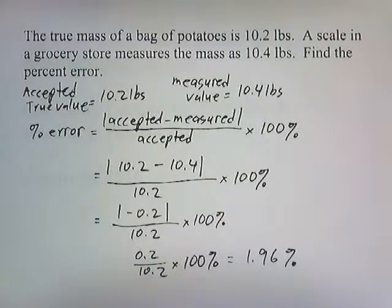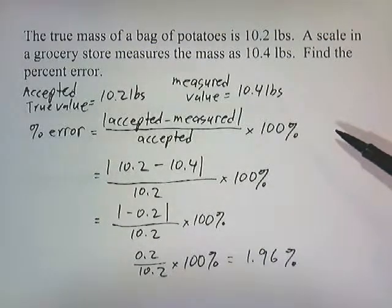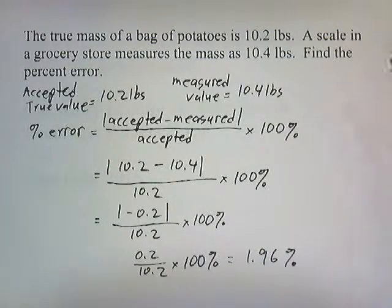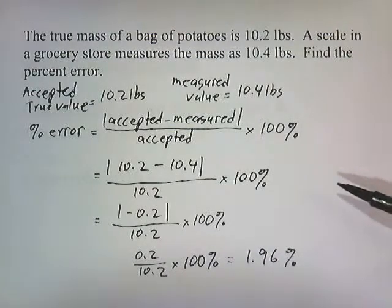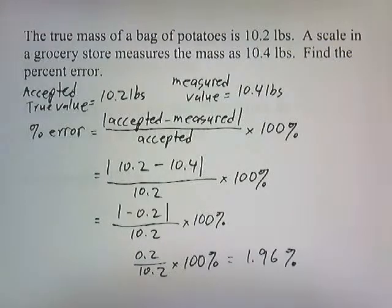So our measurement's off by 1.96%, and we're going to be paying 1.96% more than what we should be doing. If hundreds of customers use this scale, the grocery store could be stealing a lot of money because all that adds up, especially if you buy a lot of potatoes. That's why it's important to make sure that our instruments measure things accurately with a low percentage of error.